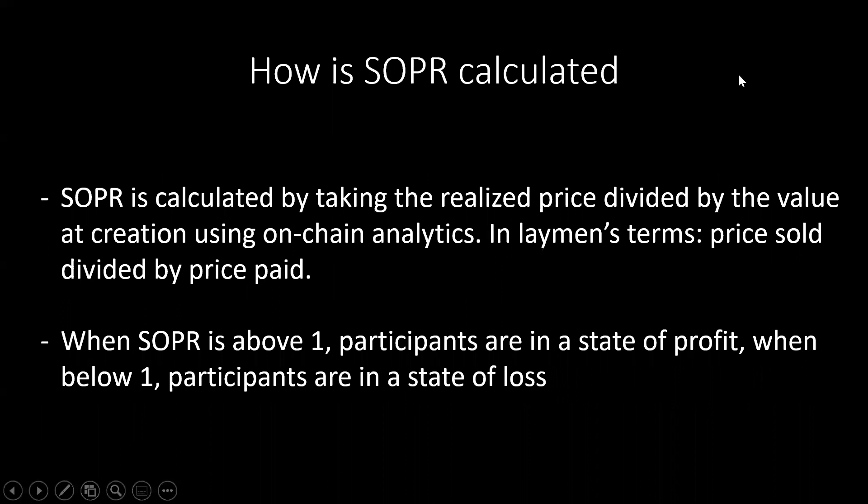So how is SOPR calculated? SOPR is calculated by taking the realized price divided by the value of creation using on-chain analytics. SOPR stands for Spent Output Profit Ratio. We're comparing the price at the time that the coins were initially moved to the price that they're now moved, assuming buying and selling through those two actions. In layman's terms, we're dividing price sold divided by price paid. When SOPR is above one, participants are in a state of profit, and when SOPR is below one, participants are in a state of loss.